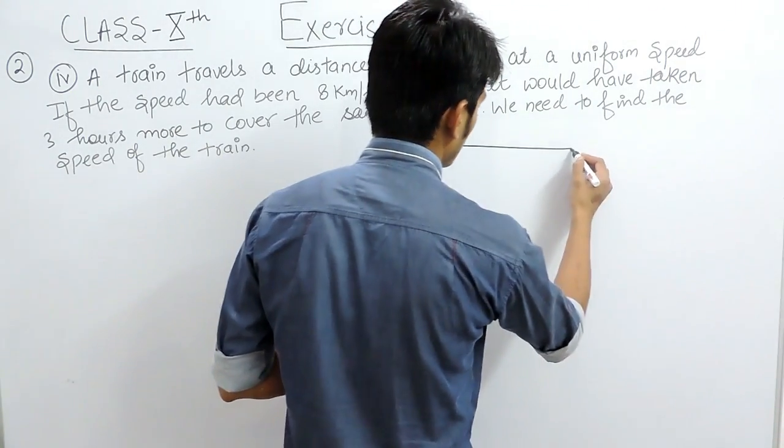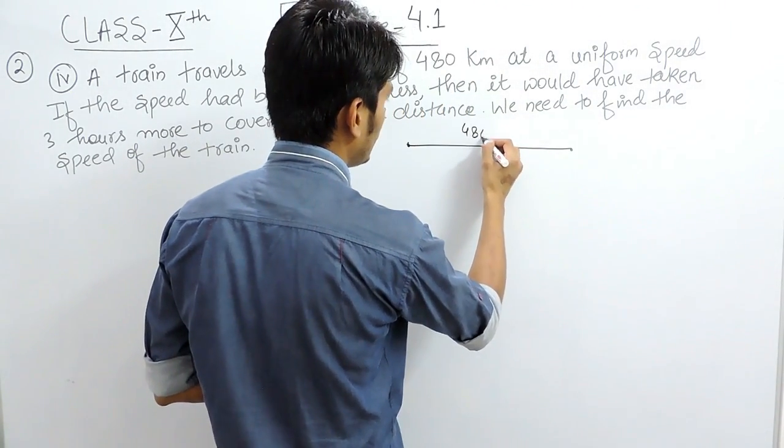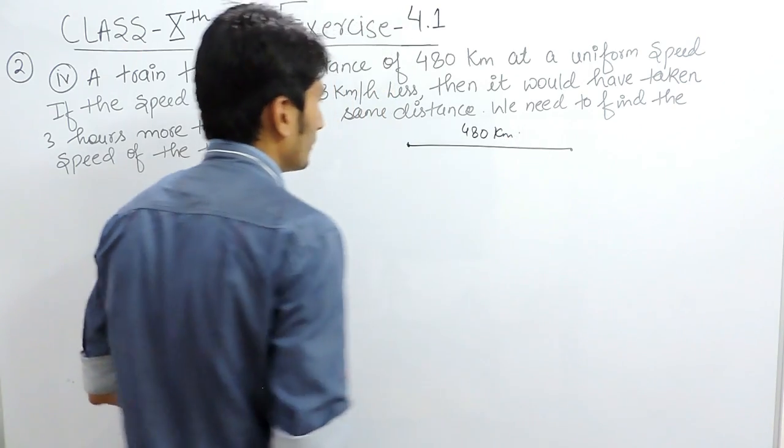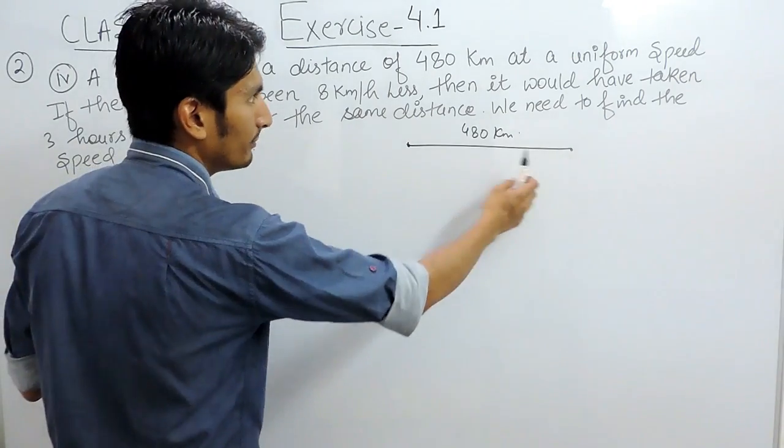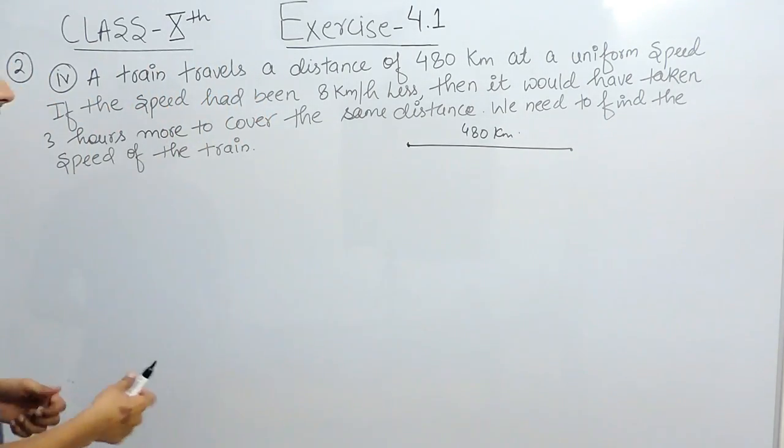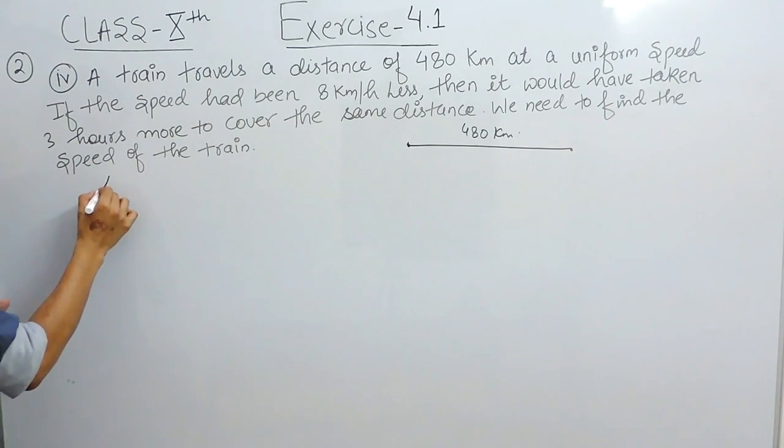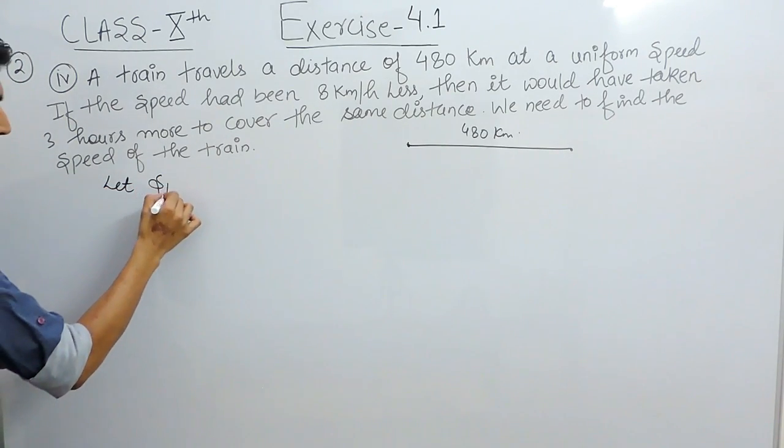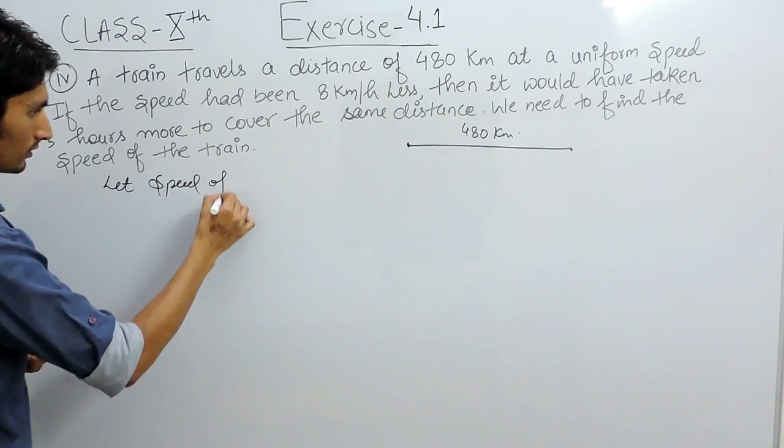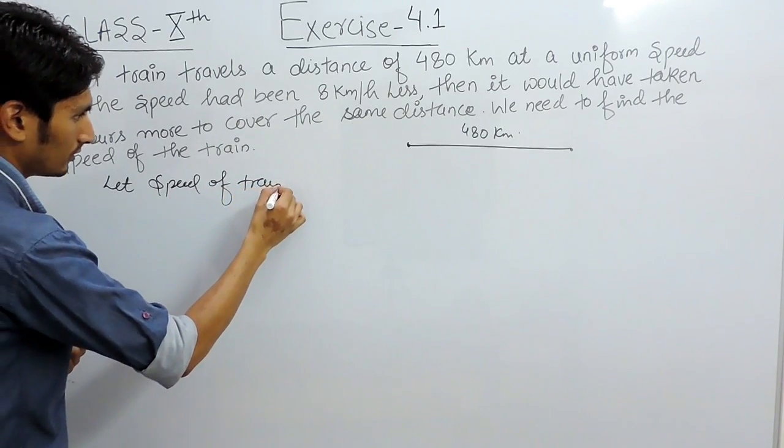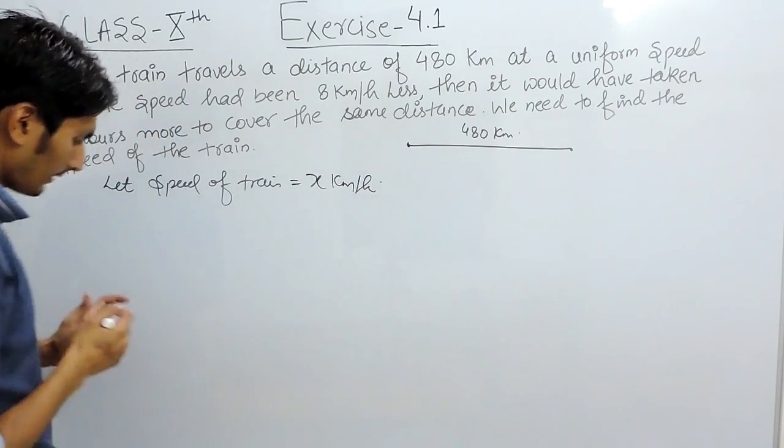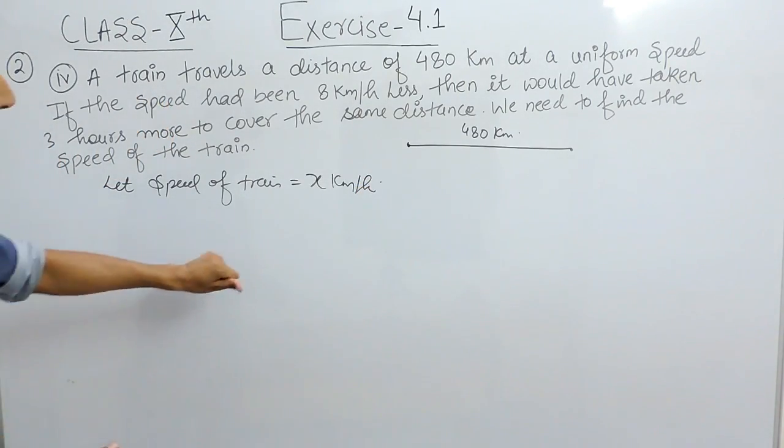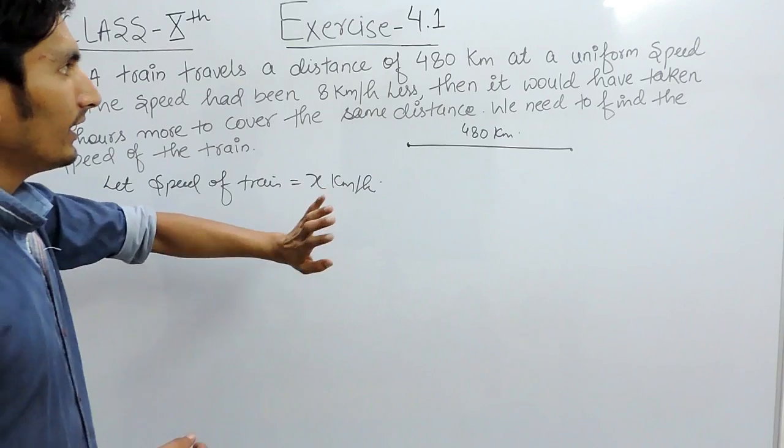The question says there is a distance which is 480 km. First of all, a train travels the distance at a uniform speed, meaning it is travelling at any speed. So let that speed be x km per hour.